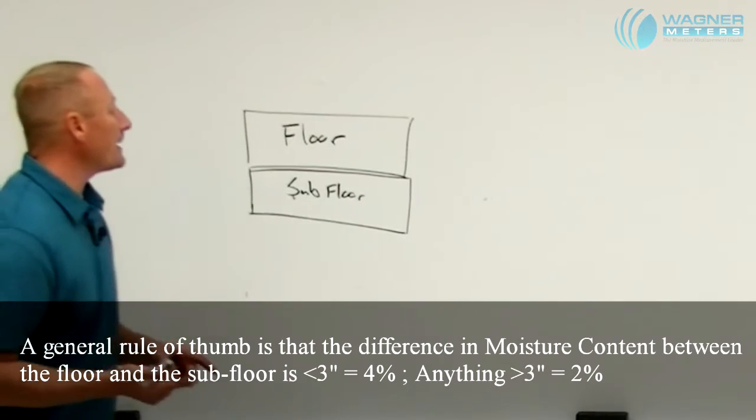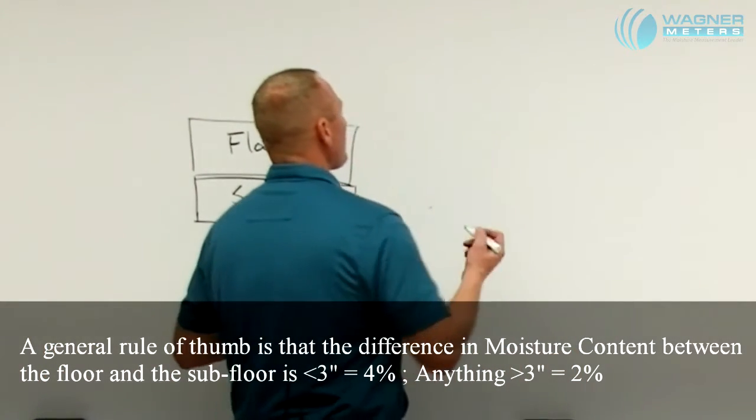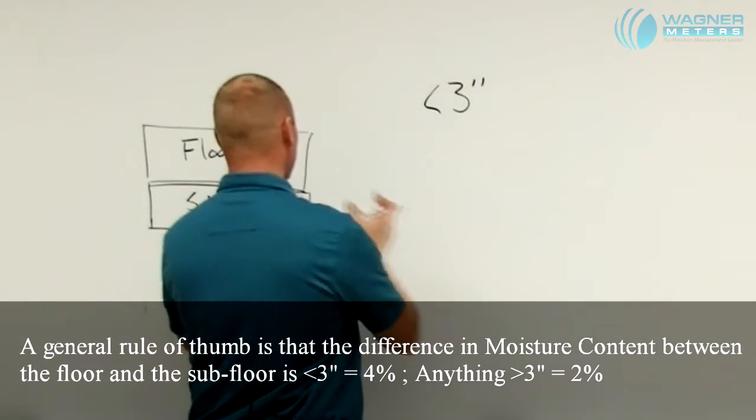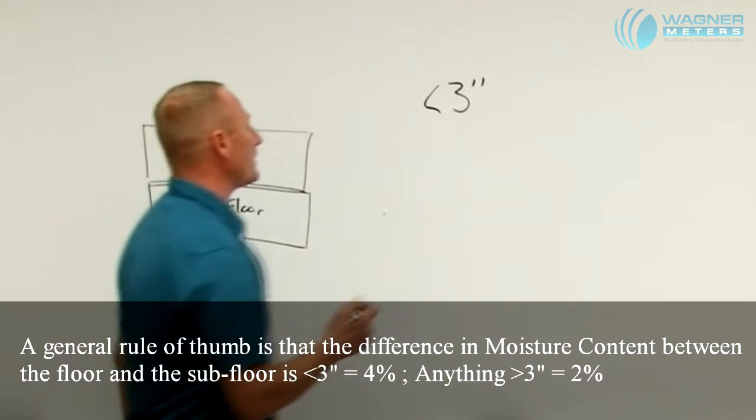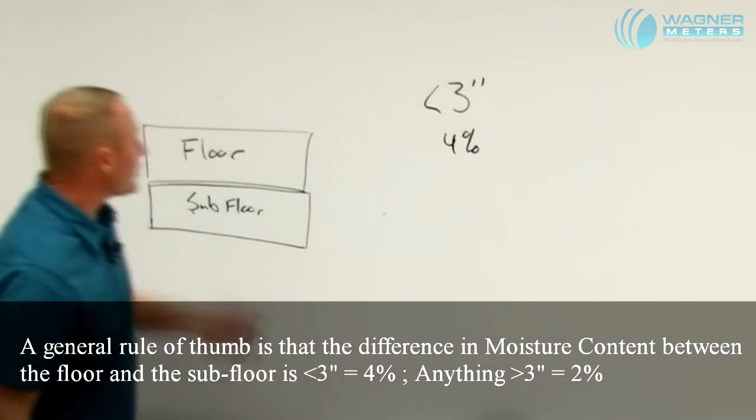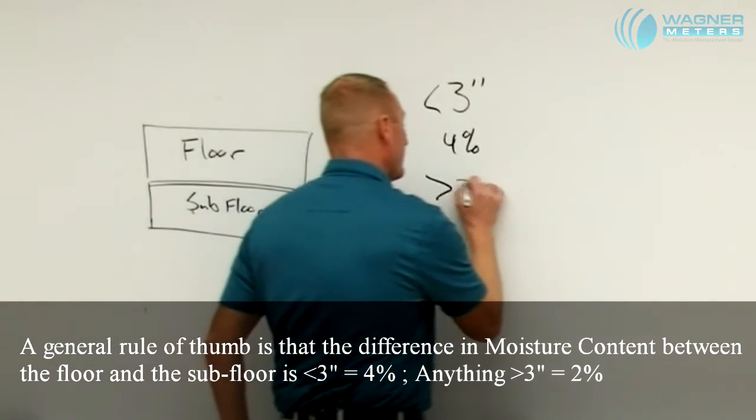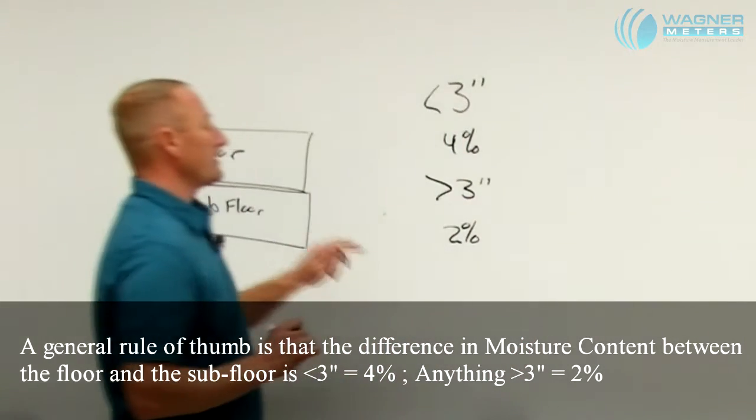A general rule of thumb is that the difference in moisture content between the floor and the subfloor is if our parts are less than three inches in width, meaning that each individual piece of our wood flooring is less than three inches in width, we may have a four percent difference in moisture content between the floor and the subfloor. Anything greater than three inches is no more than two percent difference in moisture content.